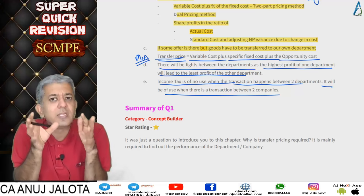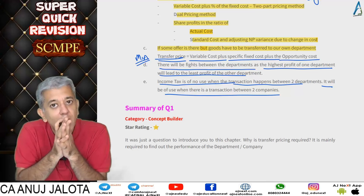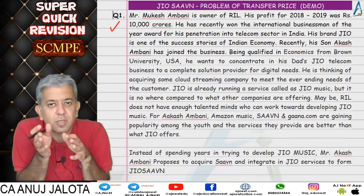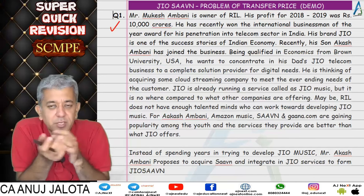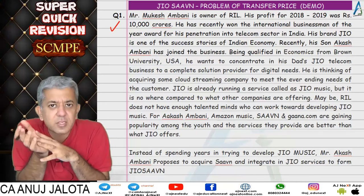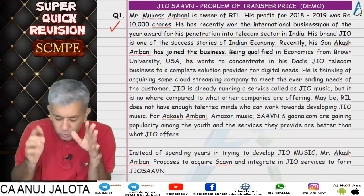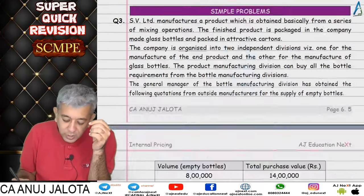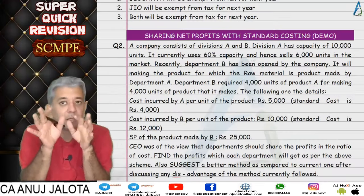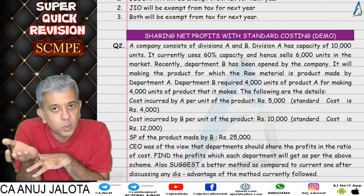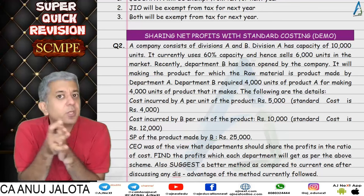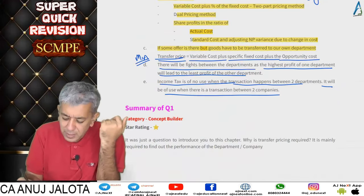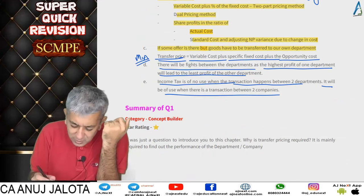Now let's summarize the questions. Question number one was a basic concept builder question — why is transfer pricing required — just to introduce the chapter. Question number two was put to teach how the 'share net profit in the ratio of cost' method works. We did two things: share the profits in the ratio of actual cost, and share the profit in the ratio of standard cost.